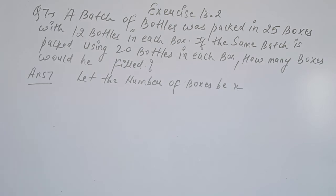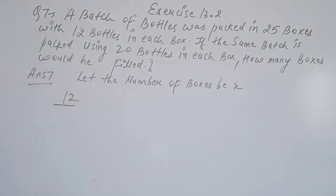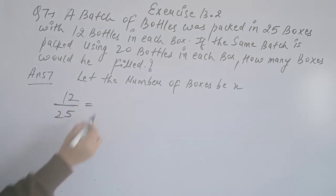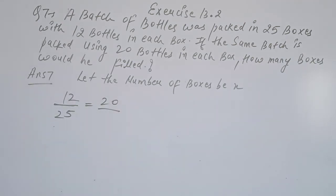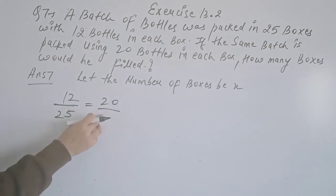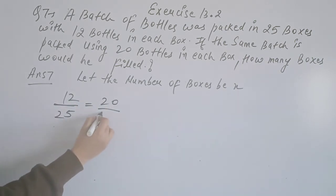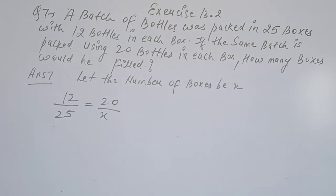We have to find the number of boxes, let that be x. In the original packing, each box has 12 bottles and there are 25 boxes total. If the number of bottles in each box is 20, we need to find the new number of boxes. The number of bottles per box and number of boxes are inversely proportional.